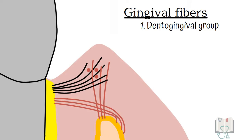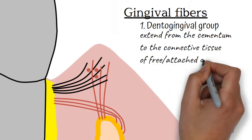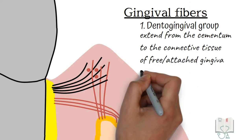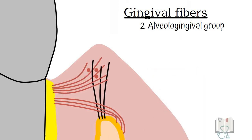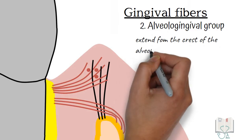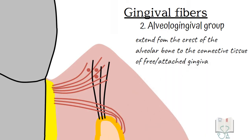Dento-gingival group. These fibers extend from the cementum to the connective tissue of free gingiva and attached gingiva. Alveolo-gingival group. These fibers extend from the crest of the alveolar bone to the connective tissue of free gingiva and attached gingiva.